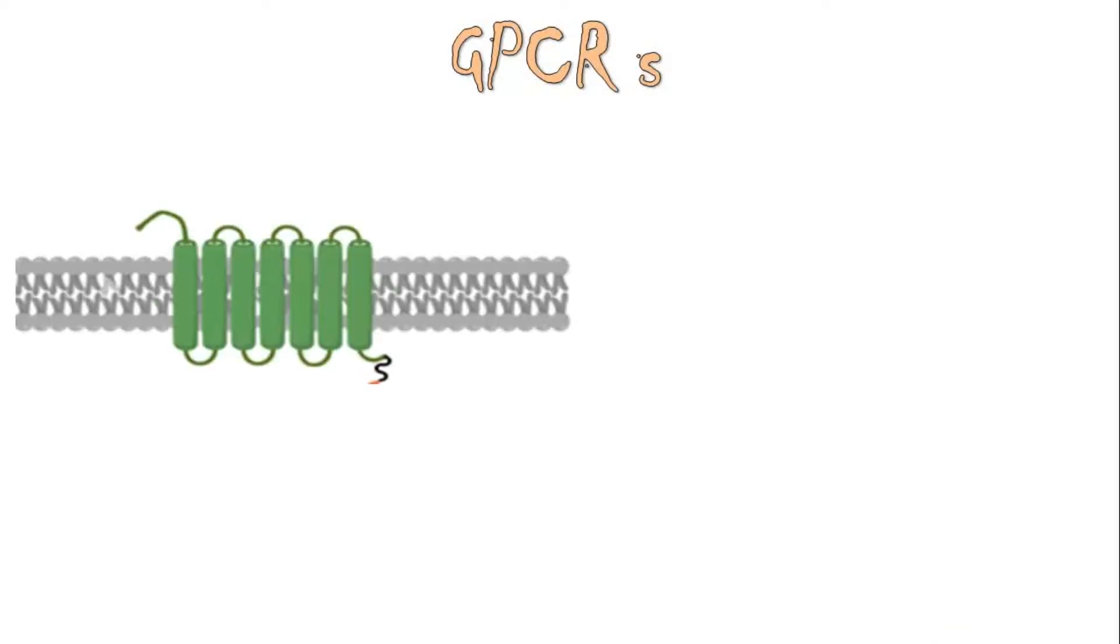G-protein-coupled receptors, or GPCRs, are transmembrane proteins made up of a single polypeptide chain and span seven times through the plasma membrane. Each receptor has an N-terminal extracellular domain and a C-terminal intracellular domain.